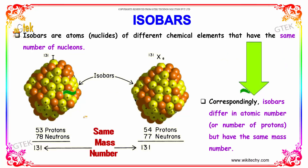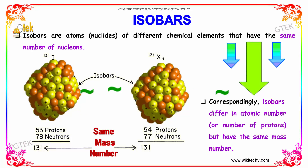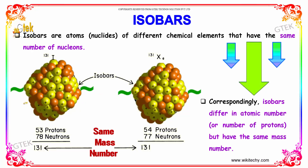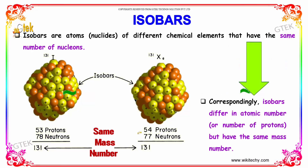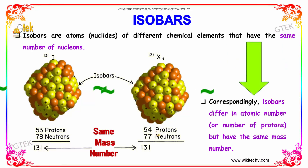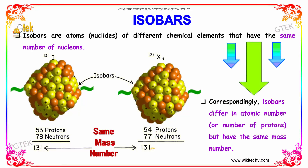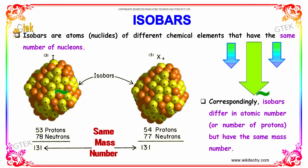As you can see, here we have 131 as a total mass number, which is from 53 protons and 78 neutrons. Over here, we have 54 protons and 77 neutrons, but the same mass number. This is referred to as isobars.